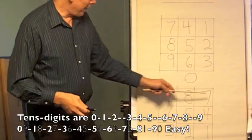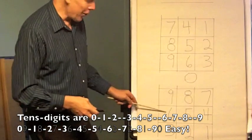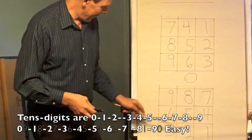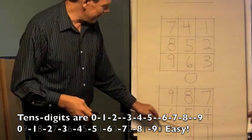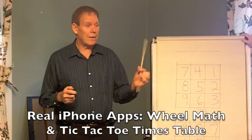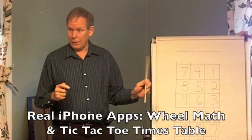9, 18, 27, 36, 45, 54, 63, 72, 81, 90. You saw how I did the 10s digits for the 3s.